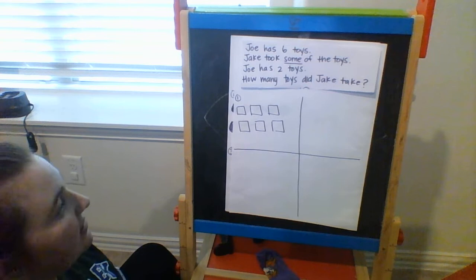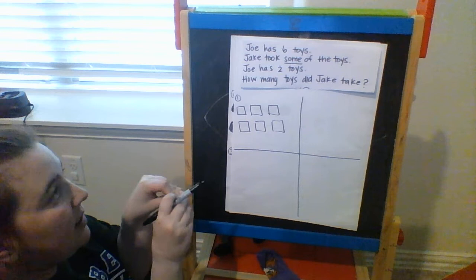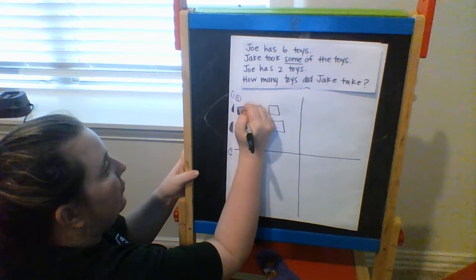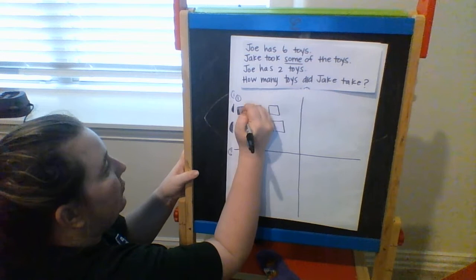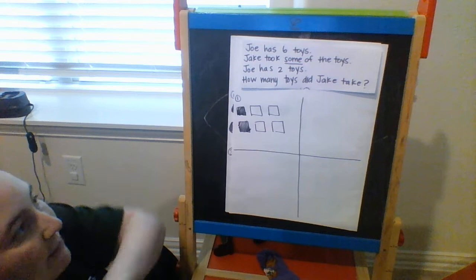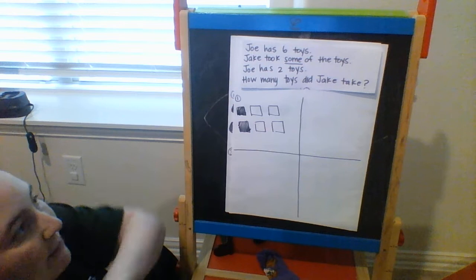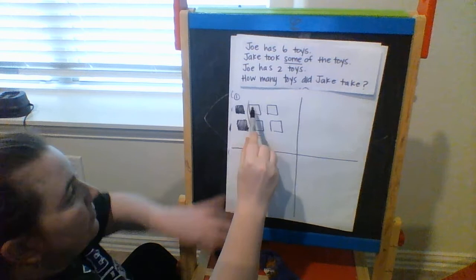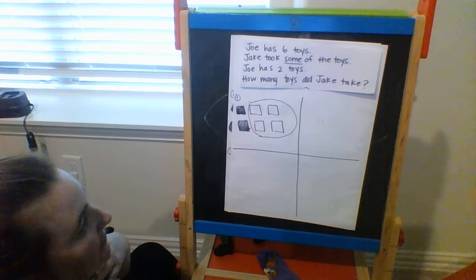The next thing the problem tells me is Jake is going to take some of the toys away. I know he's going to take them, but I don't know how many — some is not a number. The next thing I know is that after Jake came and took some away, Joe still has 2 toys. So I'm going to color in 2 of the squares to show the 2 toys that Joe still has. When I do that, my picture shows me what I wasn't able to know before, and that is how many Jake took away. If I started with 6 and ended up with 2, that tells me that Jake must have taken 1, 2, 3, 4 toys away from Joe.